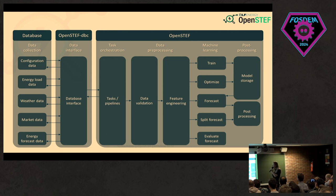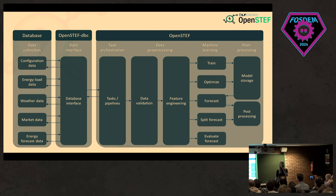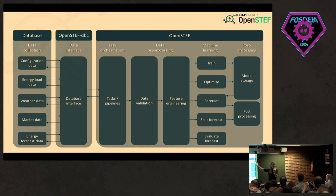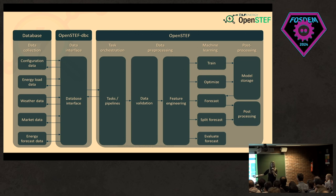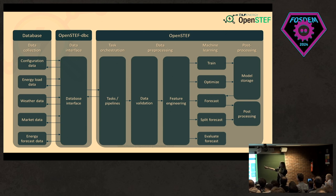Then we have something very interesting: feature engineering. In feature engineering we're able to, for example, calculate the wind speed at the height of a windmill from the wind speed on the ground, and also calculate the lag load for one timestamp. Then, of course, the machine learning pipelines — we use open source models such as XGBoost to make our models. We're able to train, optimize hyperparameters, make a forecast, and also make a split forecast using our DAZLS model. Finally, we're able to evaluate our forecasts, store our model, and do some post-processing.